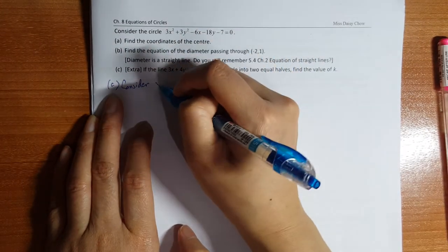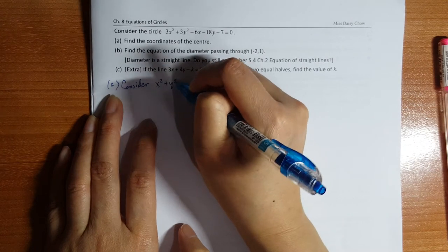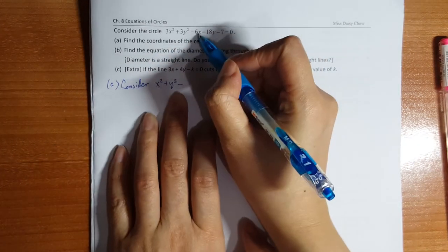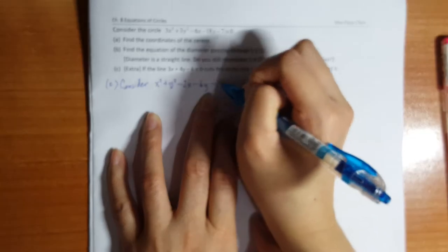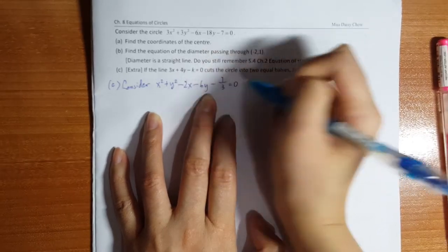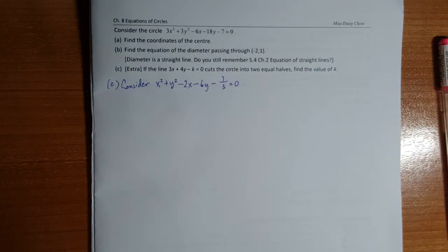So I should consider x squared plus y squared, minus this one divided by three is two, this one divided by three is six, this one divided by three is seven over three. So I have to rewrite the equations like this first.